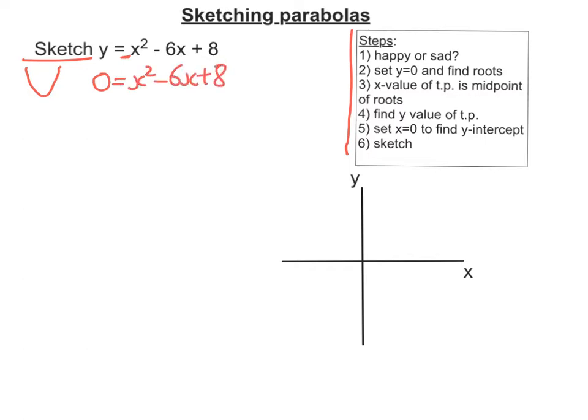Now I'm going to need to factorize that right-hand side, so I'm going to get my grid out here, put in the values I know, so I know x squared and I know positive 8.